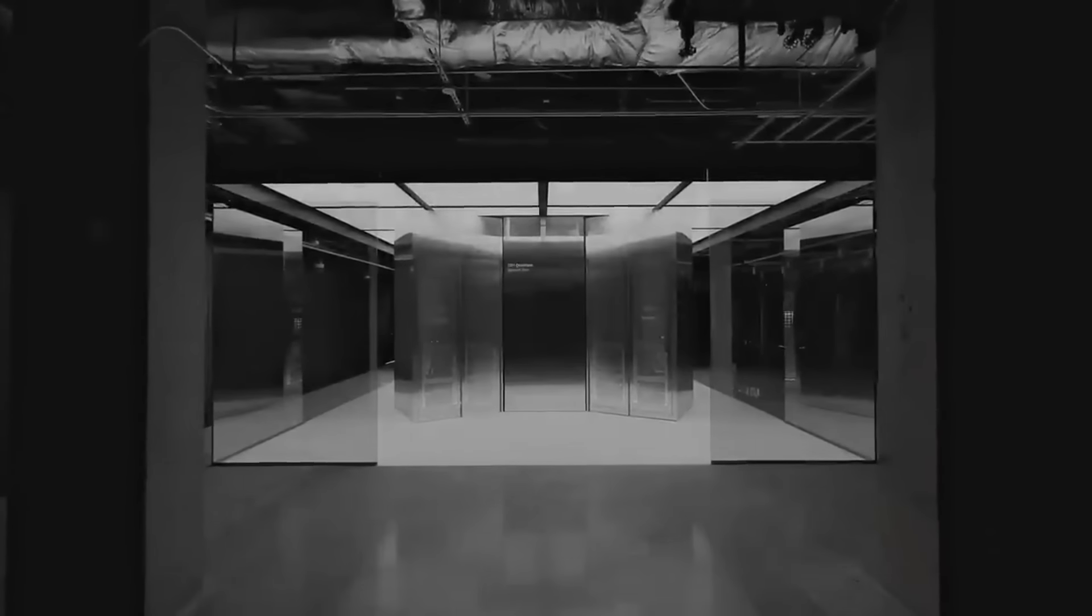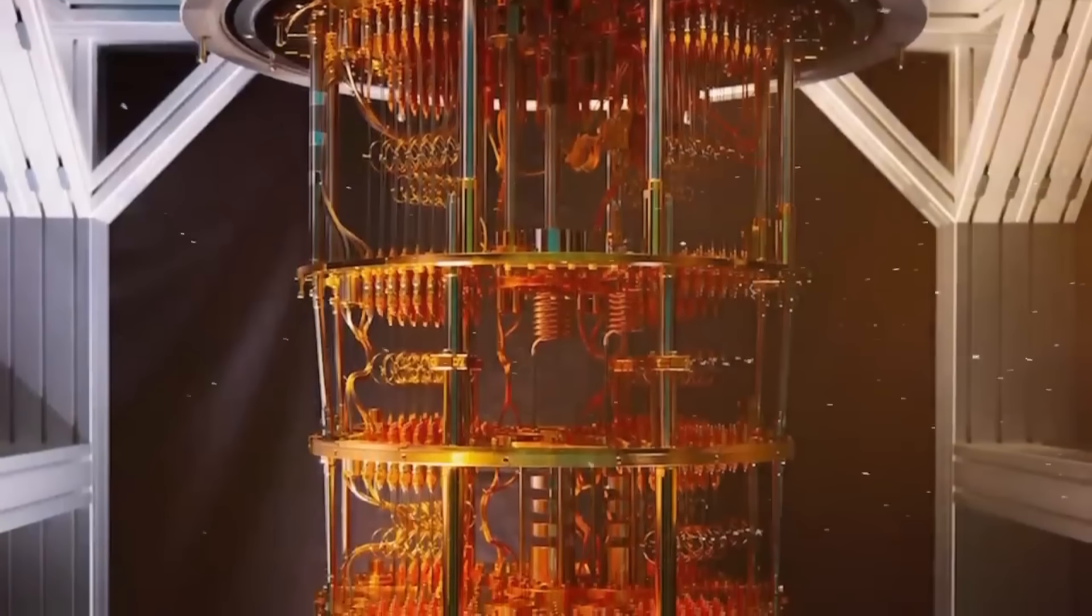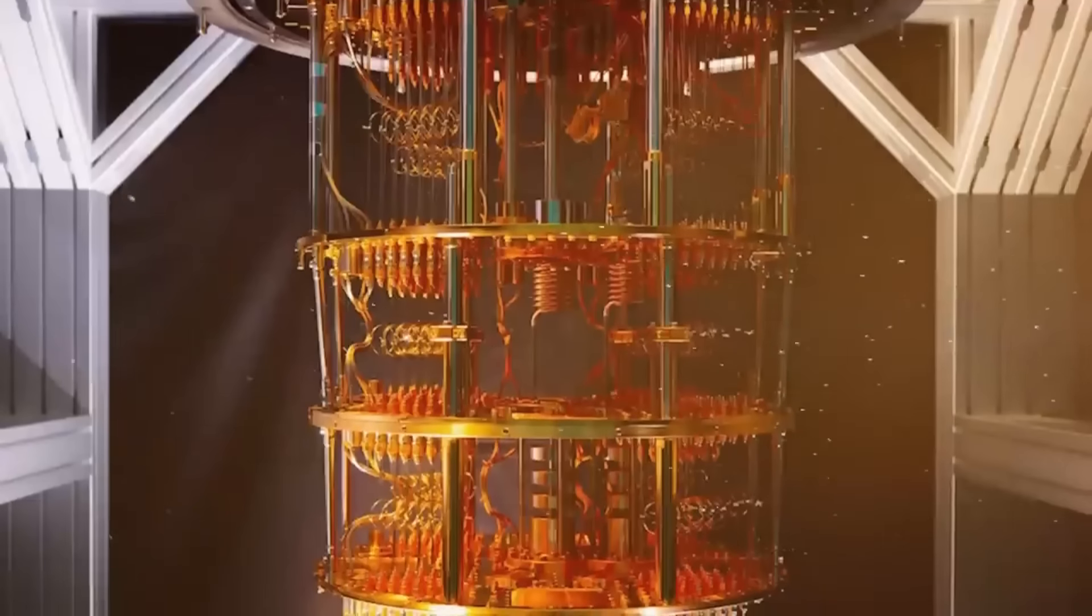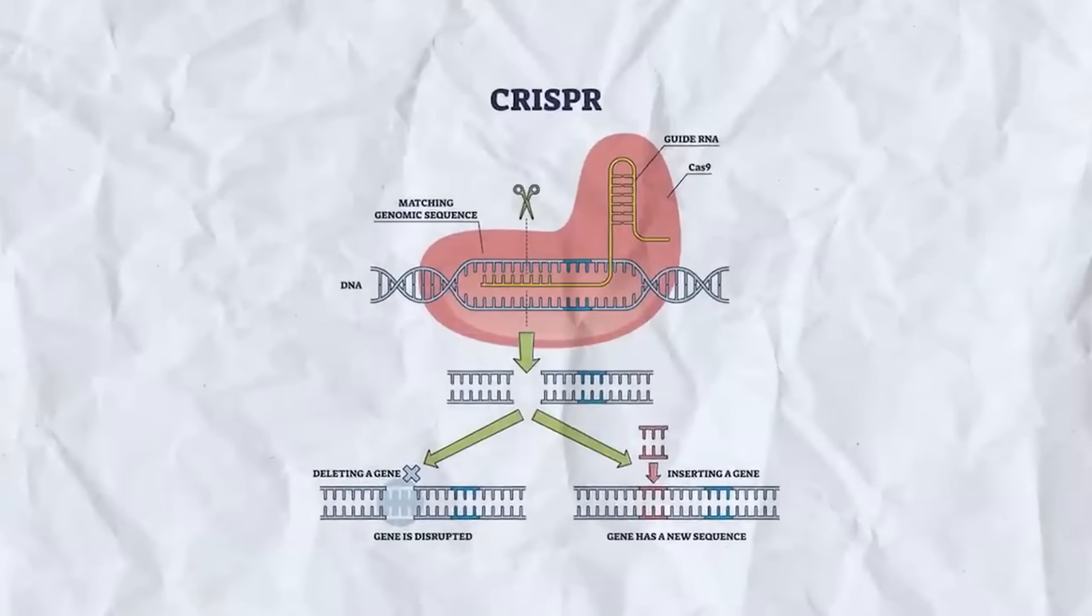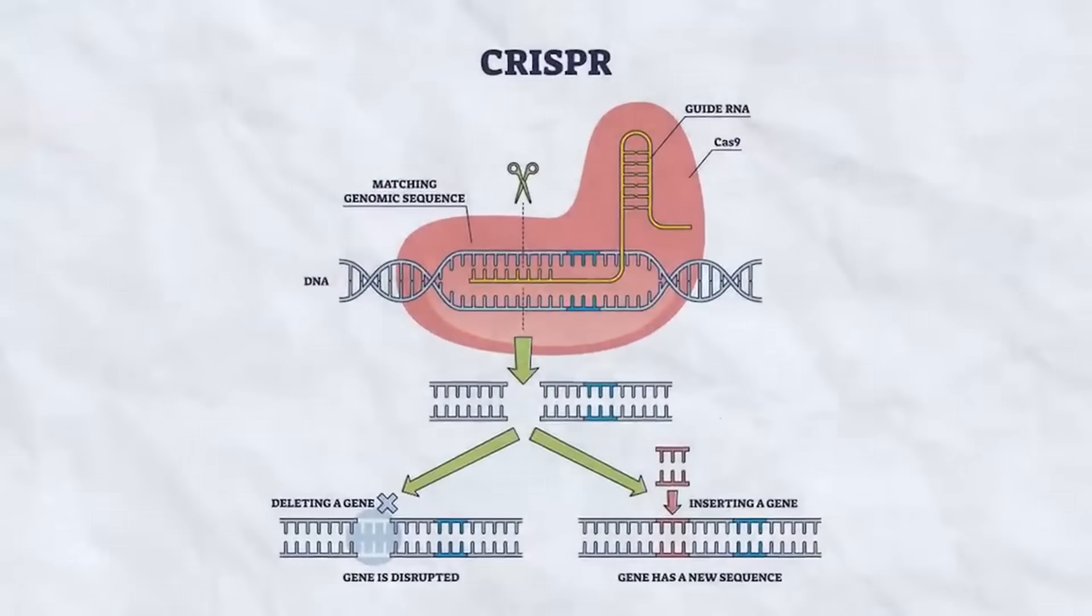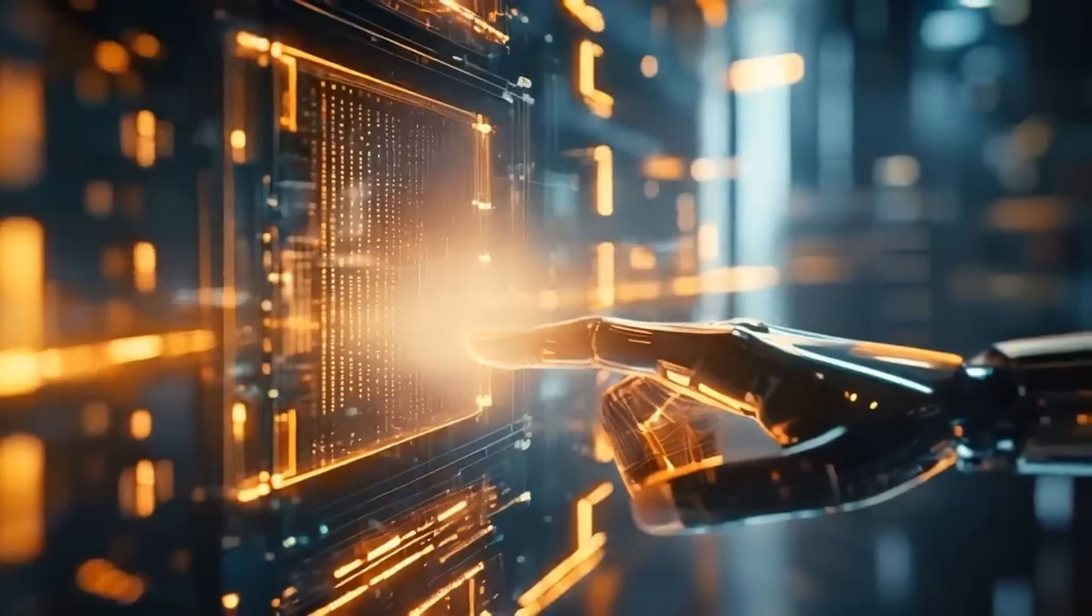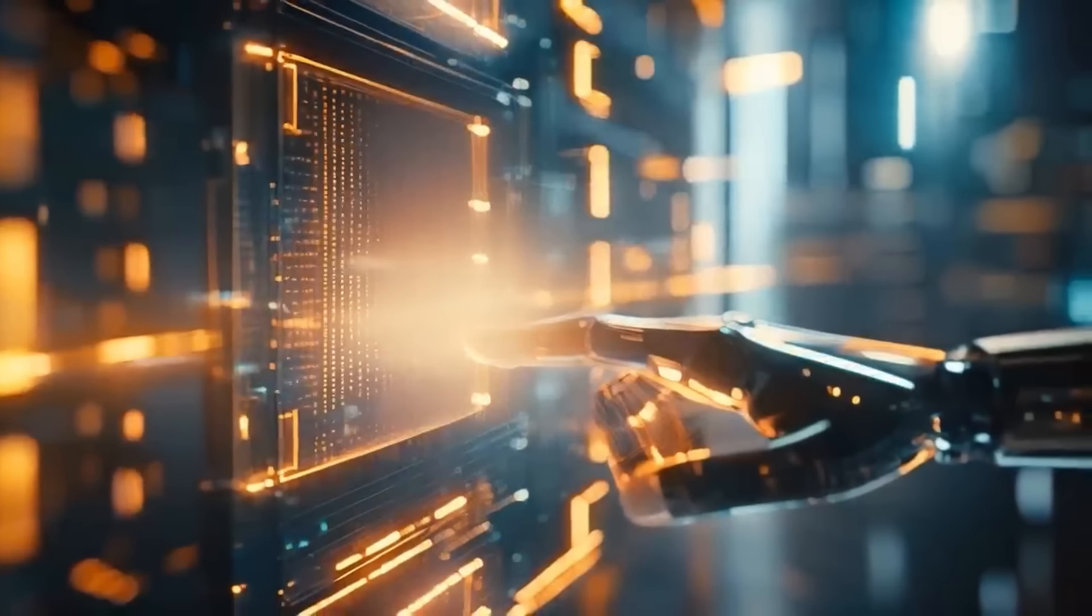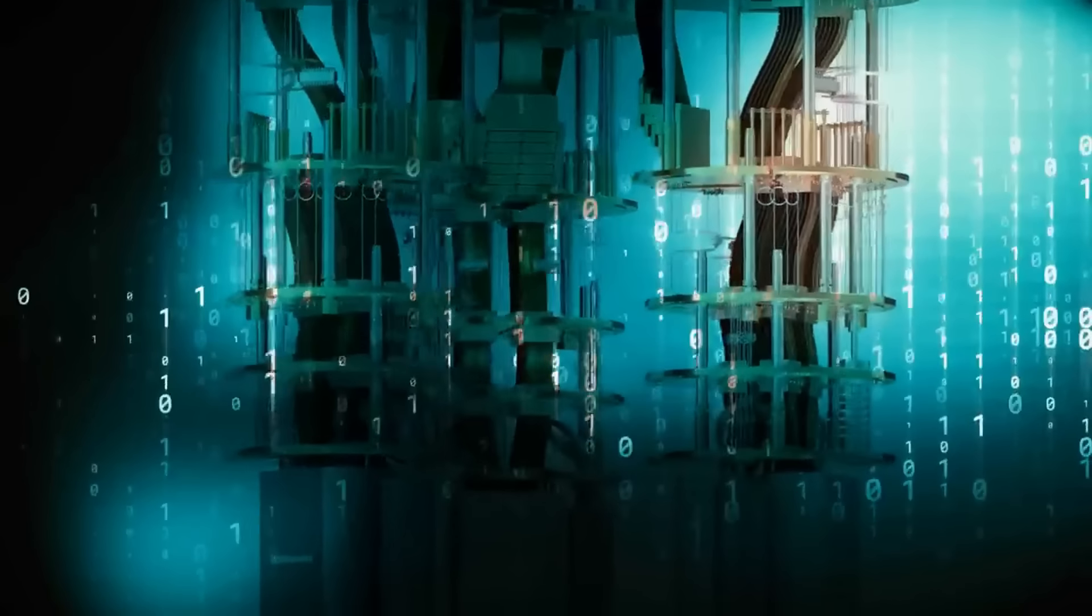Companies like IBM are already thinking about these issues. They're developing quantum computers, but also working with others to explore the ethical implications. It's a good model to follow, kind of like how we developed safety regulations alongside advancements in other powerful technologies. Remember the CRISPR gene editing tool? That's a great example. It has the potential to cure diseases, but it also raises ethical concerns. We need to learn from these situations and make sure quantum computing goes down a responsible path. With careful planning and open communication, we can harness the power of quantum computing for good.